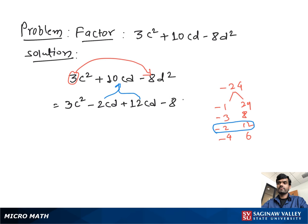minus 8D². From this pair, we take out C as a common factor, then we have 3C - 2D. From this pair, we take out positive 4D as a common factor, then we have 3C minus